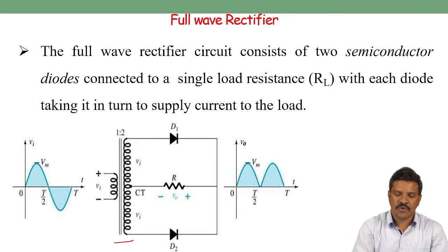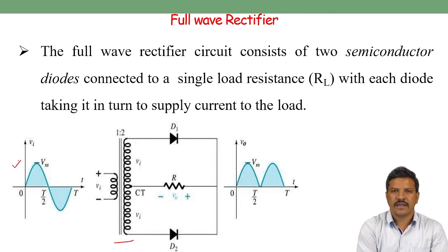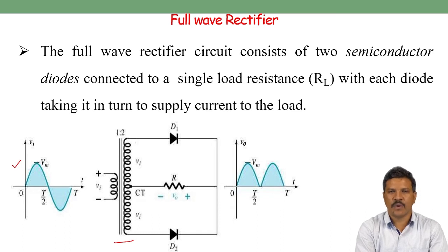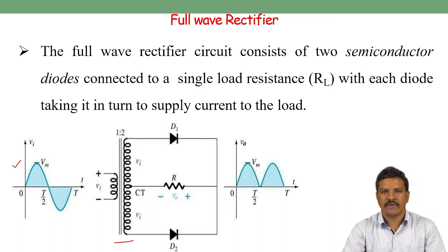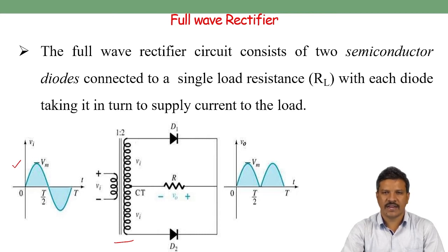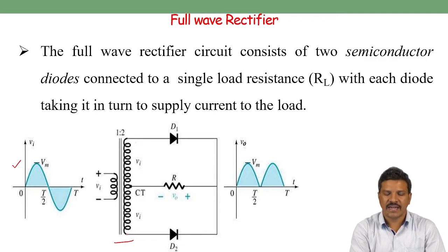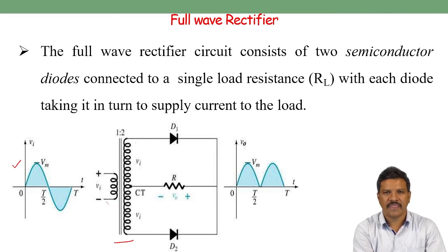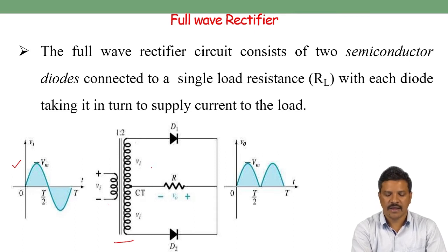In a step-down transformer, when we give an AC signal input, it can be stepped down from 230 volts to either 10 volts, 5 volts, or 9 volts based on the application. This secondary step-down voltage is available at the secondary coil. Now in the center tap transformer, whatever AC supply is given to the primary coil, it can be stepped down to the required secondary voltage — let us take 20 volts.